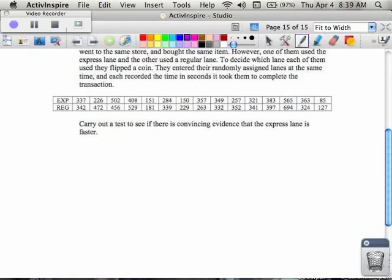So as we do this, there's an extra piece in here. The extra piece is that you're going to find the difference between these two pieces of data. So when I find the differences between these two, I'm going to take the second thing, the regular, and subtract the express from that. So for example, in the first one, 342 minus 337, that value is 5.